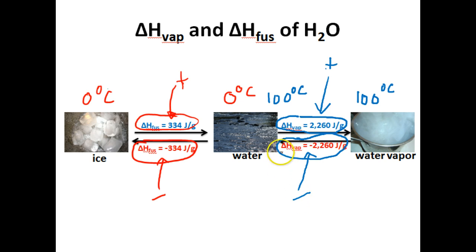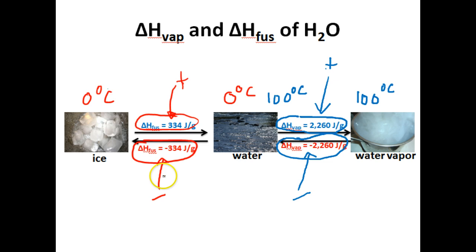Different substances have different heats of fusion and different heats of vaporization. These numbers — 334 and 2,260 joules per gram — are only specific to water. So let's take a look at some heats of fusion and heats of vaporization for other substances.